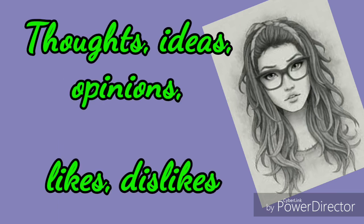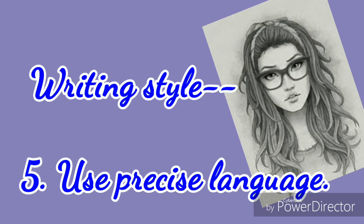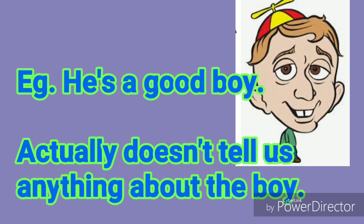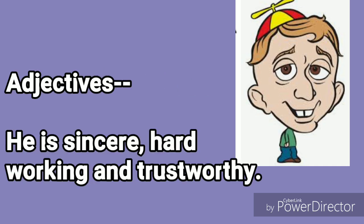Once you're sure about what to write in terms of physical appearance and personality, you should then focus on how to write it — that is, the writing style. Make use of precise language to construct your pen portrait. For example, if you say 'he's a good boy,' this sentence doesn't tell us anything, but if you say 'he is sincere, hard-working, and trustworthy,' you have accurately pointed out his qualities.